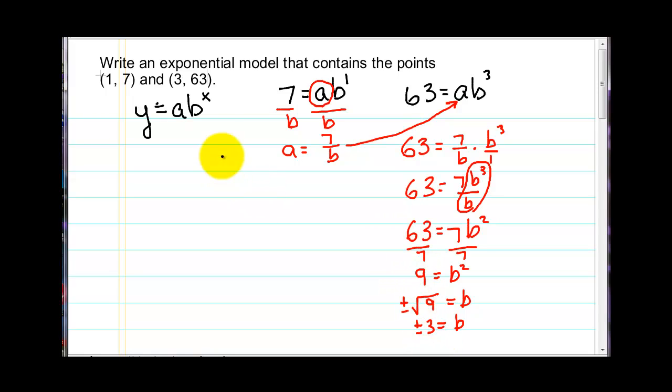Now when we write our model, if you remember back for exponential growth models, or exponential decay, the value of b is never negative. So for this particular problem, we're just going to use the plus 3 value for b.